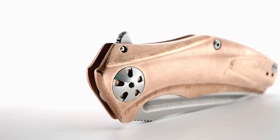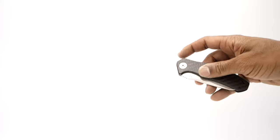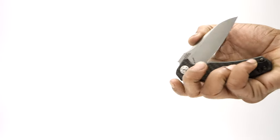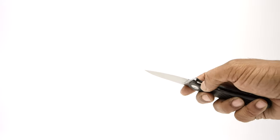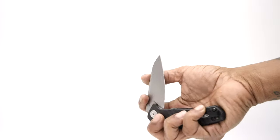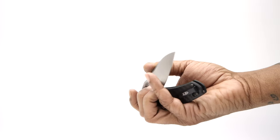Now on to the areas the Natrix tends to shine brighter in. Number one for me and the biggest difference is their action. The ZT 0770 is using assisted opening and for what reason on earth I can't figure out.